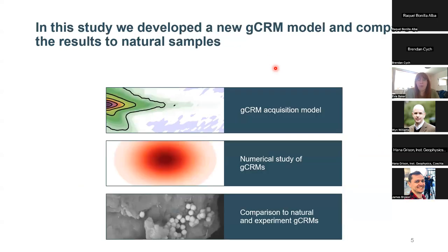The way we did this is we developed a CRM acquisition model based on Preisach theory, which was based on a TRM Preisach model successfully used to represent TRM acquisition in basalts. We can use this to explore how different acquisition conditions and sample properties affect CRM intensity and behavior, and also to make direct comparisons to natural and experimental samples from the literature.